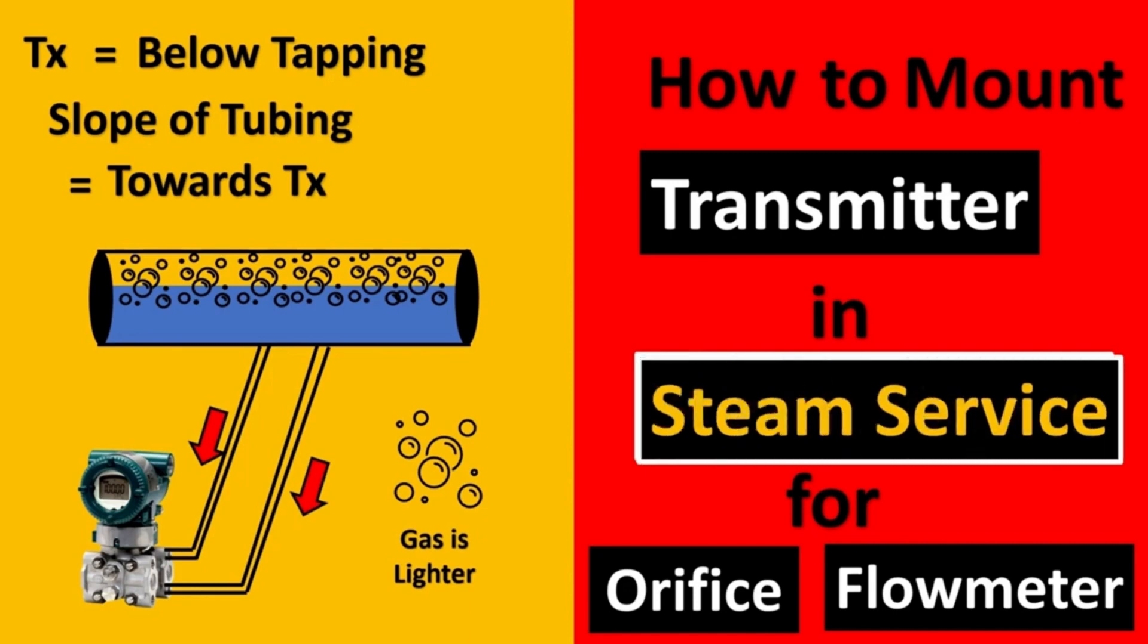Finally, you might ask if it's the same for steam services. The answer is yes. For steam services also, the transmitter is put in the downward direction so that the water gets condensed and is able to store in the impulse line. The steam cannot directly hit the transmitter and damage it.